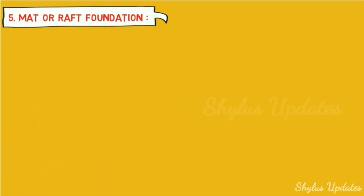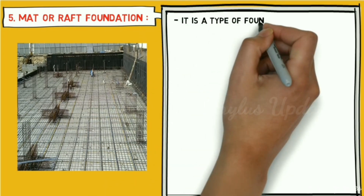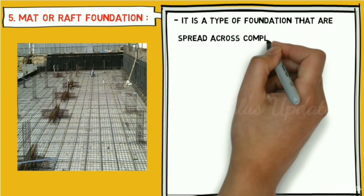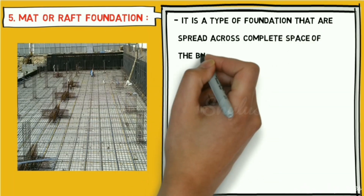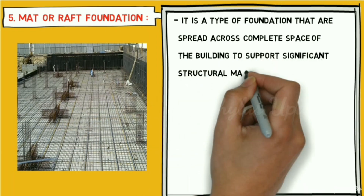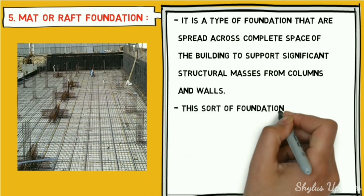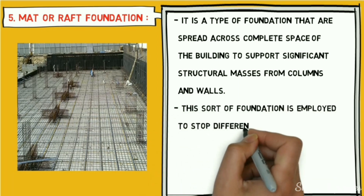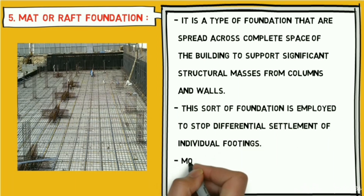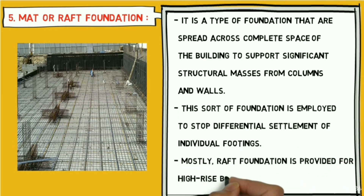Mat or raft foundation is a type of foundation spread across the complete footprint of the building to support significant structural loads from columns and walls. This type of foundation is used to prevent differential settlement of individual footings. It is mostly provided for high-rise buildings.